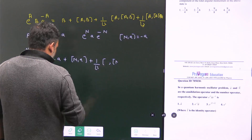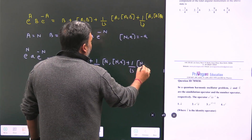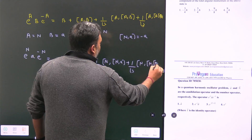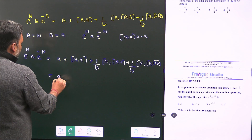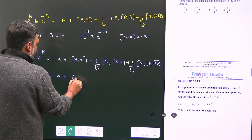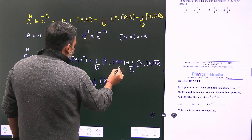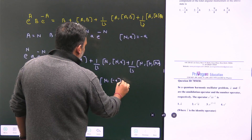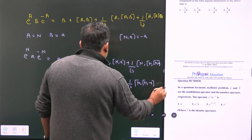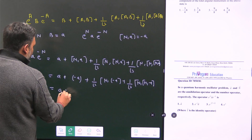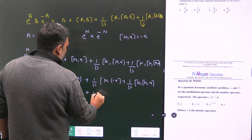Expanding term by term: the first term is a. Since [N, a] = -a, the second term is minus a. For the next term, 1 over factorial 2 times [N, [N, a]]: since [N, a] = -a, then [N, -a] = plus a, so this term gives plus a over factorial 2. Then 1 over factorial 3: applying [N, ] once more gives minus a over factorial 3, and this pattern continues.